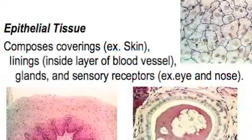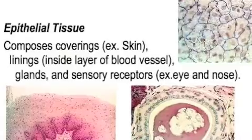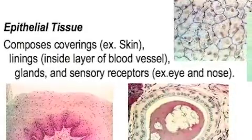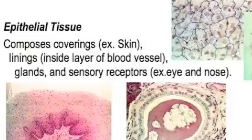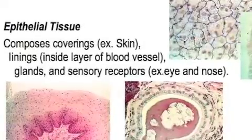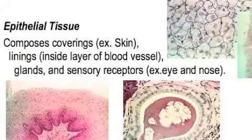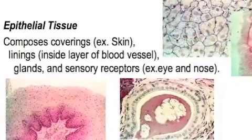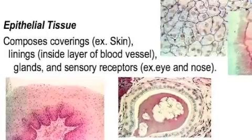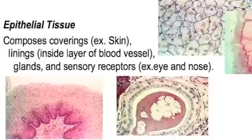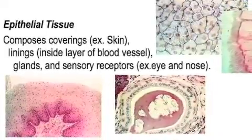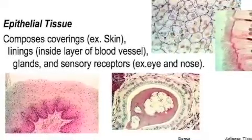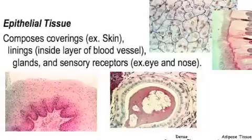Epithelial tissue is a bit more diverse. It composes coverings like the skin — you can see that in the bottom left slide. It makes linings, such as the inside of blood vessels. It also composes glands, which you can see in the picture here in the middle. And it is found in sensory receptors, such as the eyes and the nose.